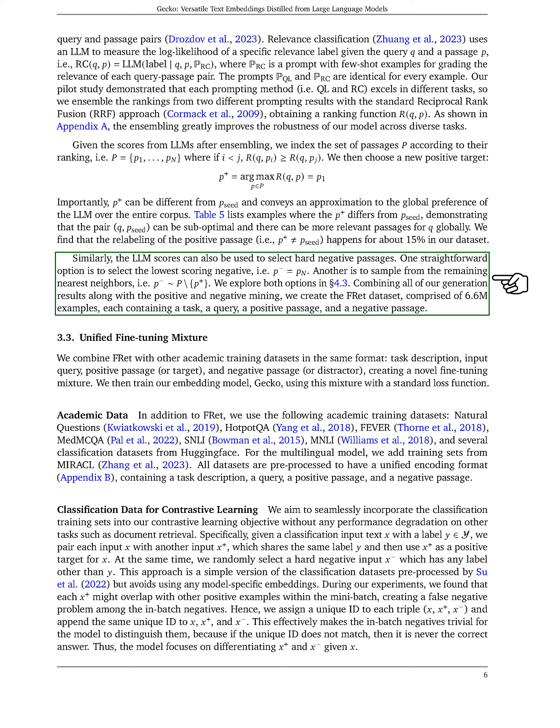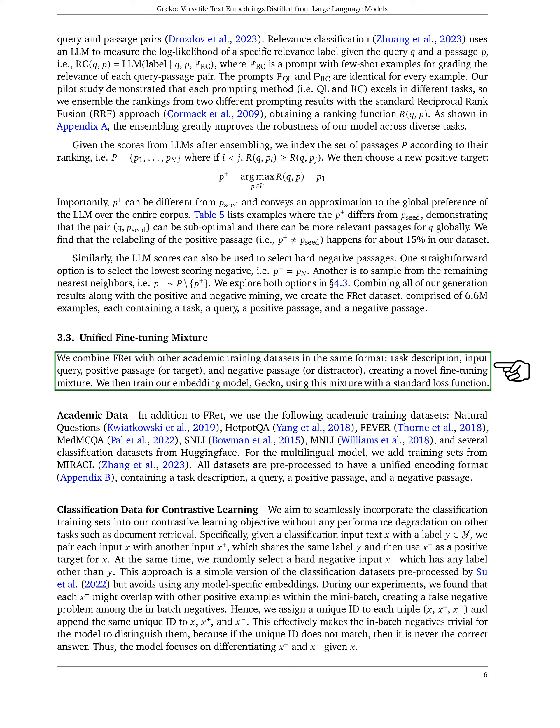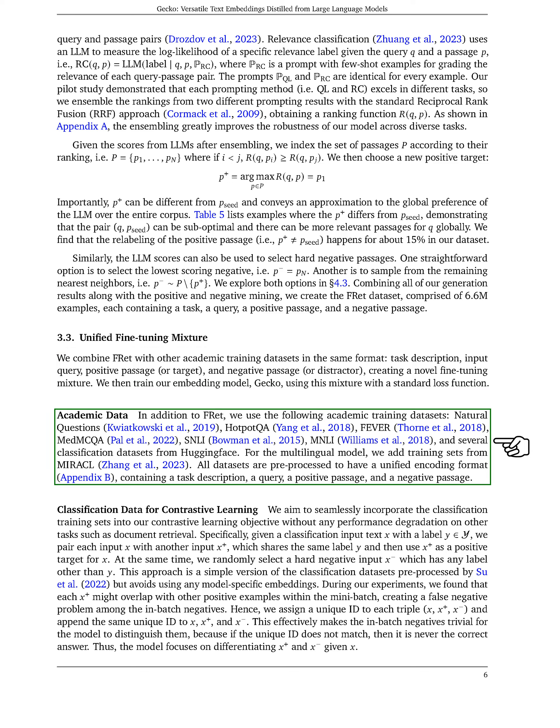We then select a new positive target that better represents the global preference of the LLM over the entire dataset. Additionally, we use LLM scores to choose hard negative passages, exploring two options: selecting the lowest scoring negative or sampling from the remaining similar passages. By combining all these results, we create the FRET dataset consisting of examples with tasks, queries, positive passages, and negative passages. We further merge FRET with other academic training datasets in a unified format and fine-tune our embedding model, Gecko, using this mixture.